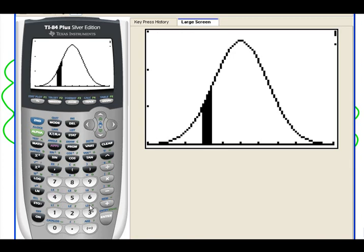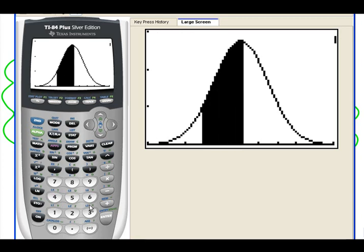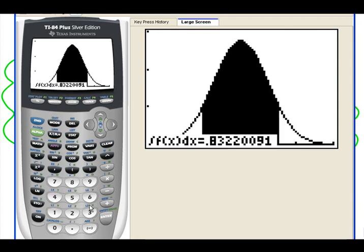And there it is. The calculator will shade in the region below the curve between the upper and lower limits and above the x axis. And tells us there's about an 83% probability that a man's height will be between those numbers. Pretty cool, huh?